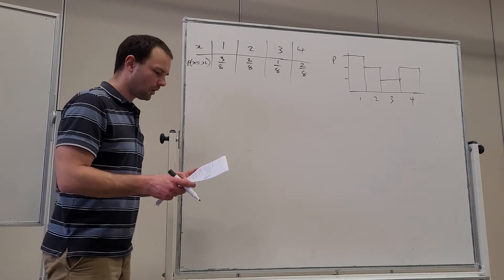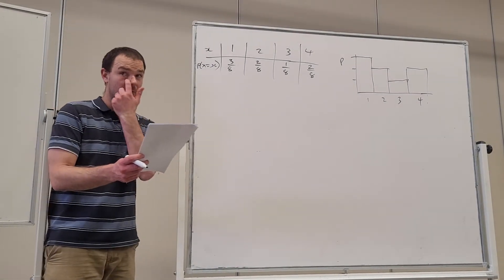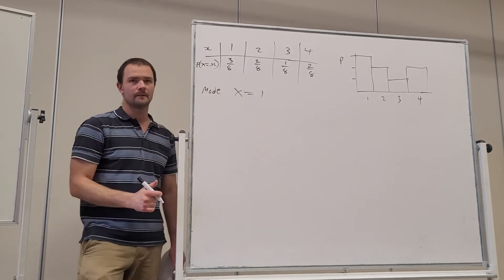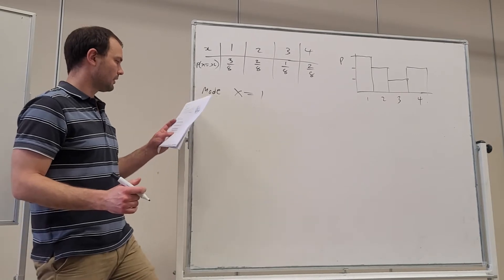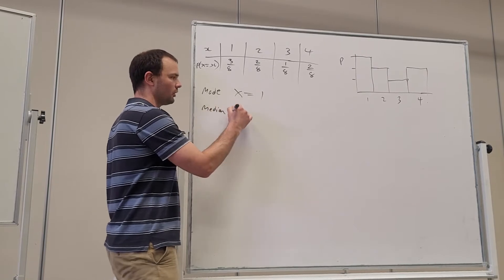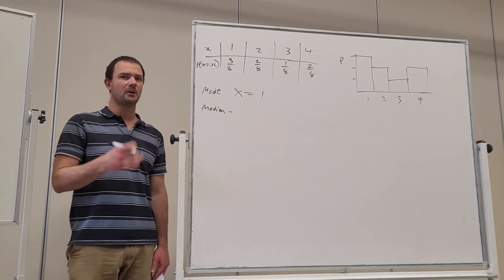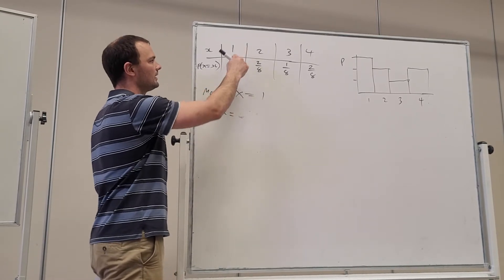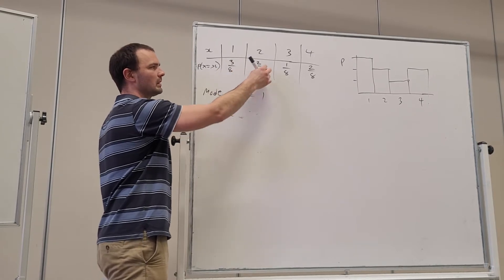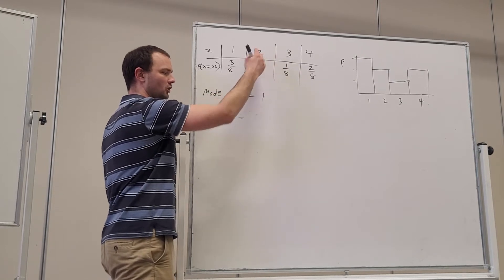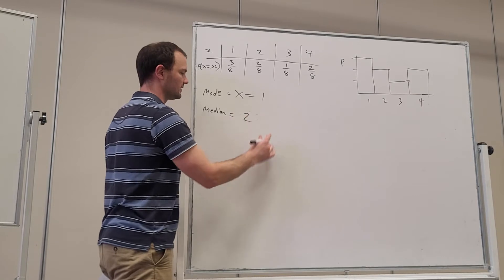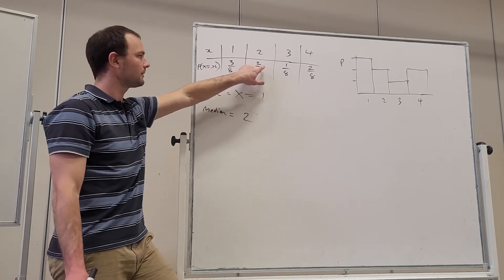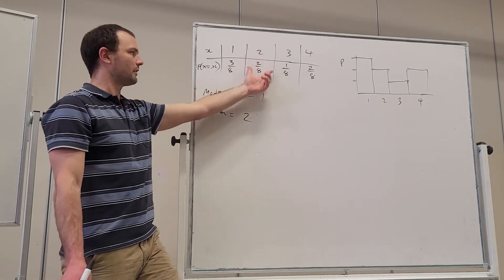Find the mode and the median of the distribution. The mode is the event with the highest probability, so the mode is one. The median is the event that occurs when the cumulative probability exceeds 0.5. Here we've got 3/8 + 2/8 = 5/8, so it's when event two is occurring that the cumulative probability exceeds 0.5. So the median is two. We've got 5/8, which is 0.625 — that's larger than 0.5, so the median occurs at this event.